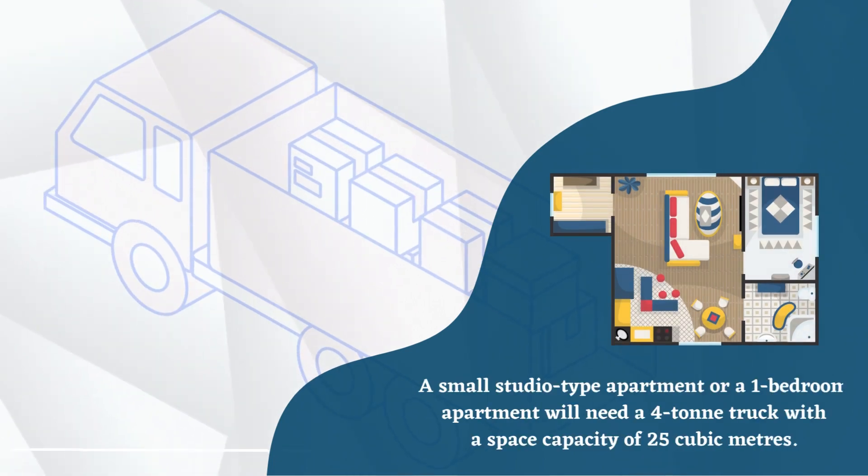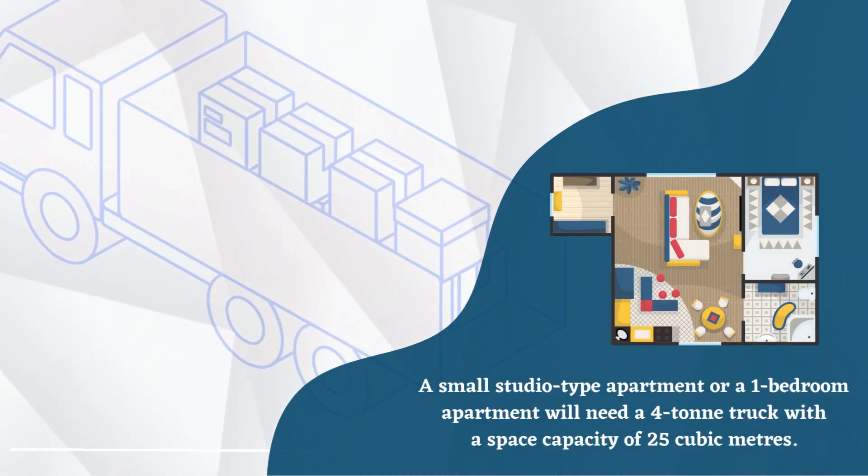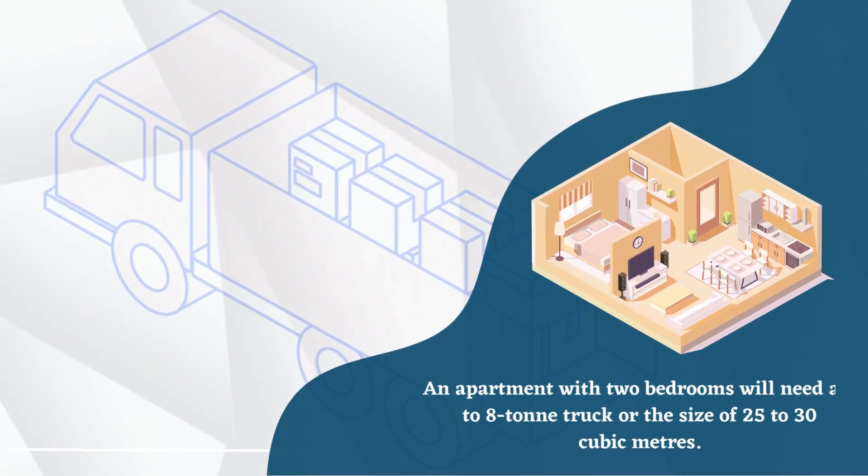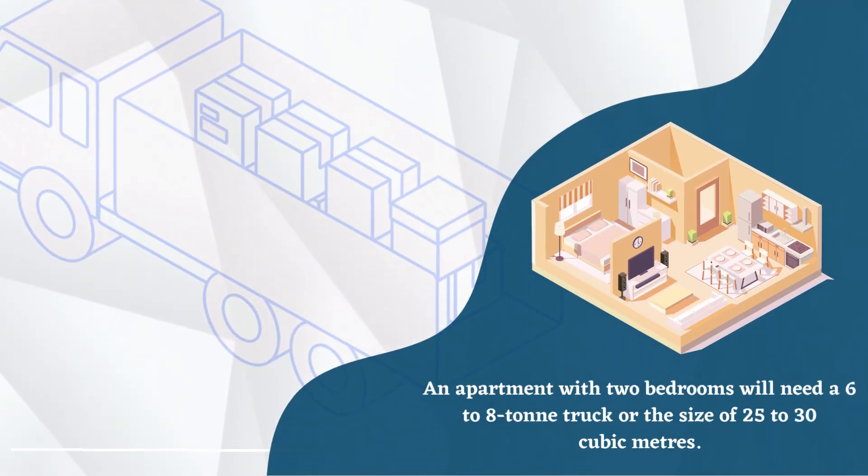If you have a one-room apartment, you will need a 4-ton truck with a space capacity of 25 cubic meters. For a 2-bedroom apartment, you will need a 6 to 8-ton truck with a size of 25 to 30 cubic meters.